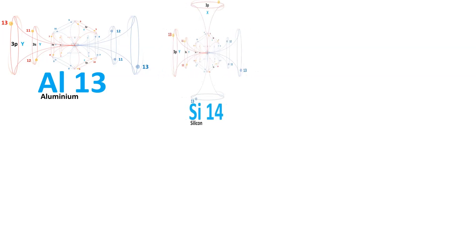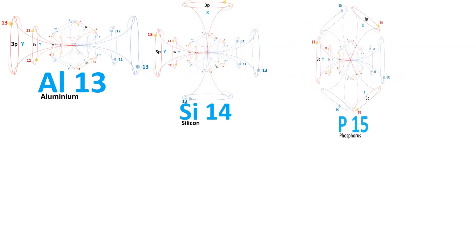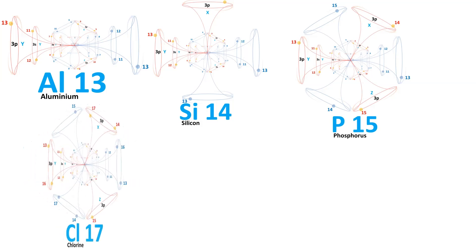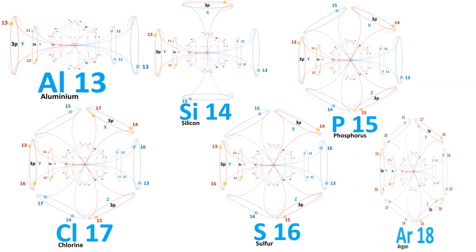With further progression through the periodic table, numerous elements and additional orbitals unfold. Transitioning to the 3s orbital, housing higher energy and capable of accommodating two electrons and two positrons.